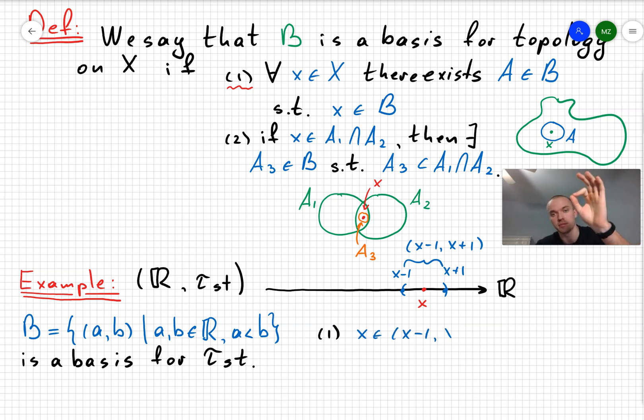For the first assumption, take some x on your real line. And if you're going to go one to the left or one to the right, you're going to obtain an open interval (x-1, x+1). And that open interval obviously belongs to B. So that's why the first assumption satisfies.